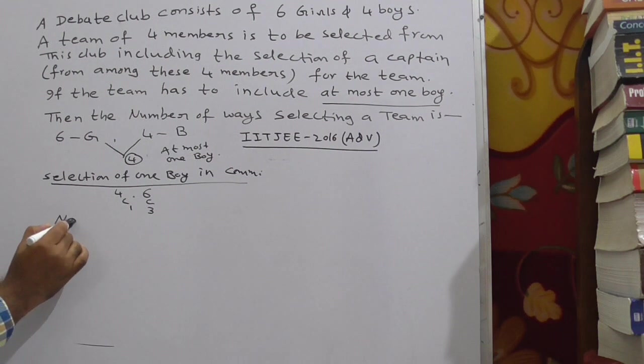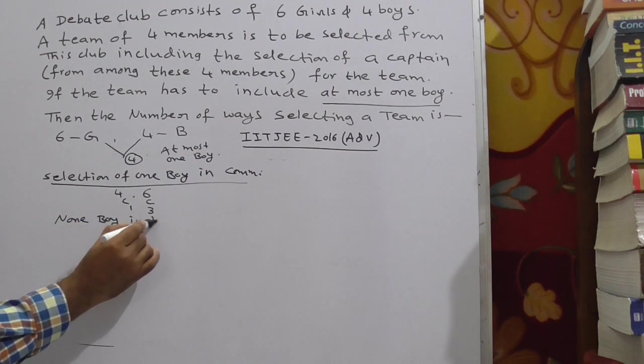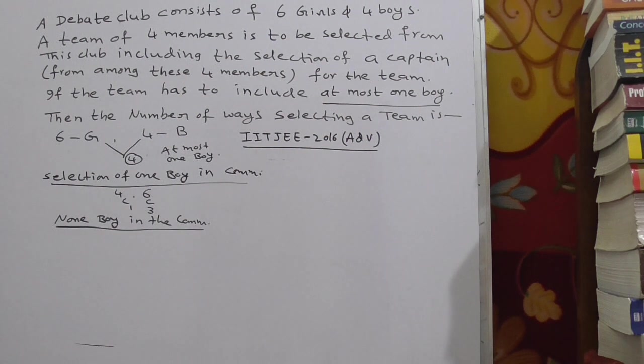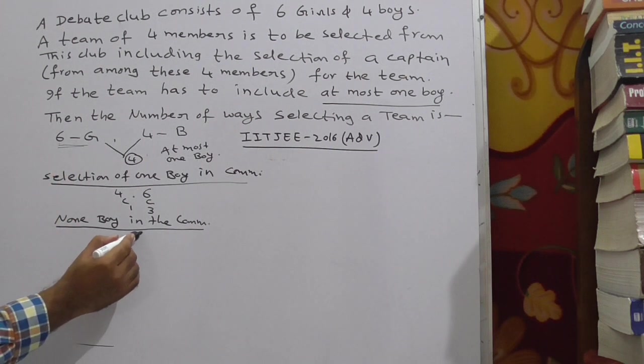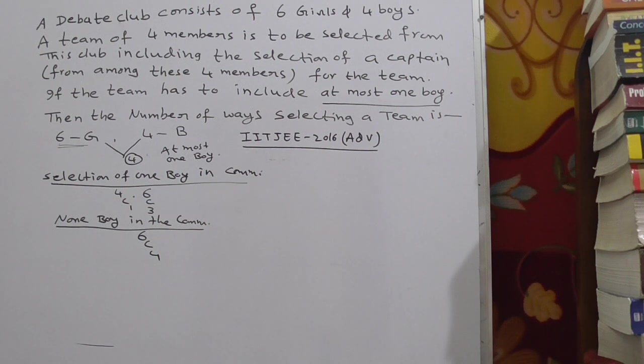The next case, no boy in the committee. That means 0 boys in the committee. In this case, you should not select a boy. But you have to select 4 members. That means all the 4 from the girls only. So how many girls are there? 6. Select 4. This can be done in 6C4 ways.